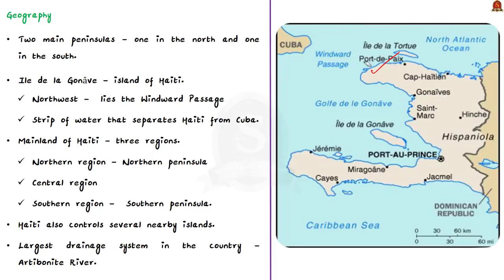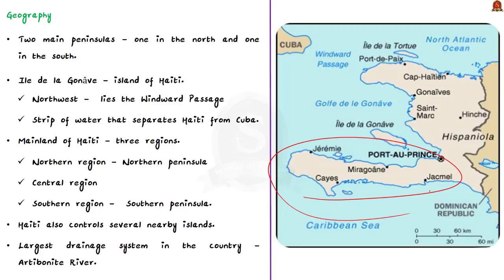Haiti's mainland has three regions: the northern region including the northern peninsula, the central region, and the southern region including the southern peninsula. Haiti also controls several nearby islands and has numerous rivers and streams. The Artibonite River is the largest drainage system in the country.